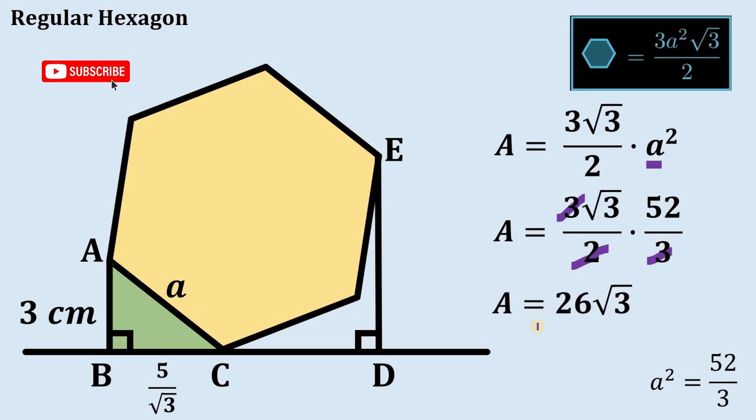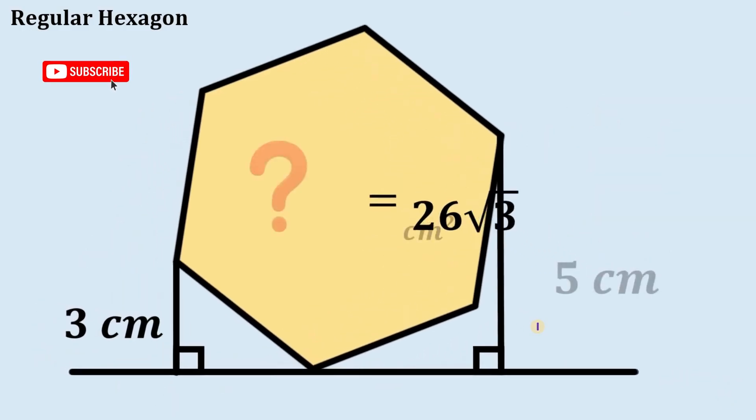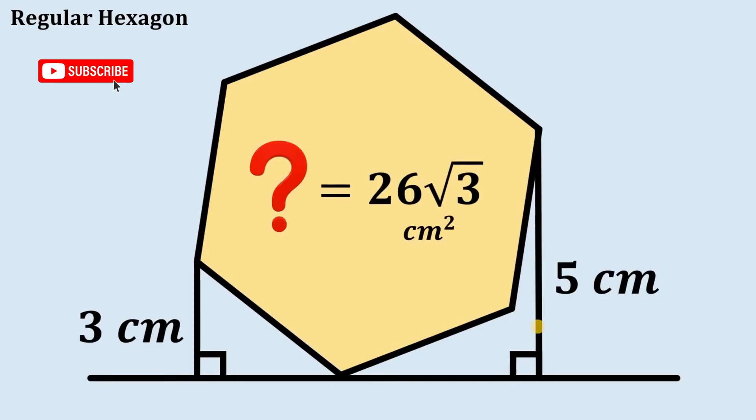The area of this regular hexagon equals 26 times square root of 3 square centimeters, and that is our answer to this question.